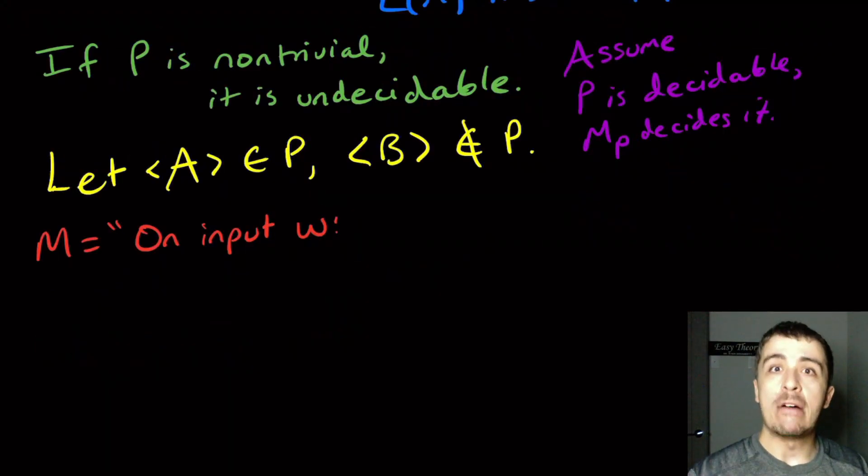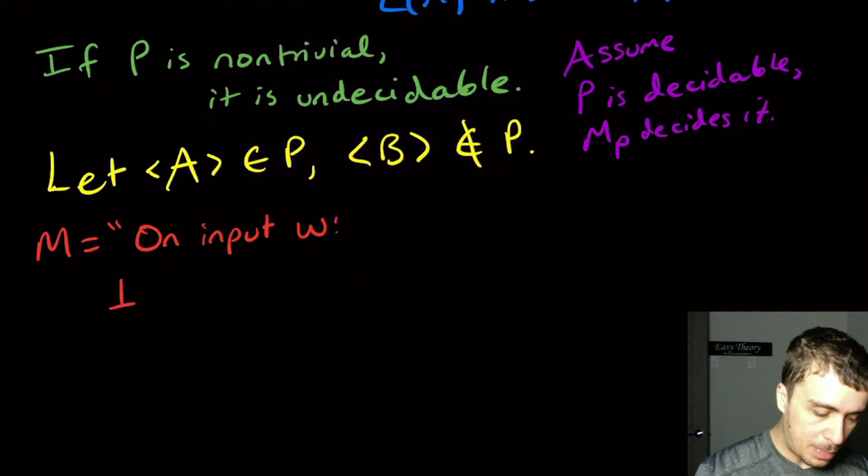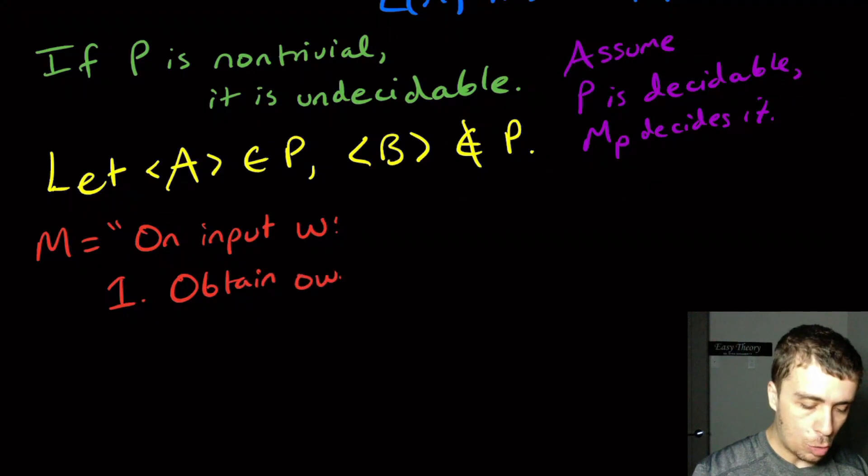How is this going to work? We're going to now appeal to the recursion theorem. The first step of M is to obtain our own description called <M>.